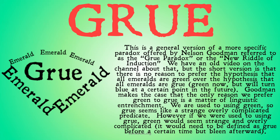However, if we were used to using Grue, green would seem like a strange and overly complicated predicate, because it would need to be defined as Grue before a certain time, but Glean afterward — Glean being the opposite of Grue. Check out that video if you're curious on this.